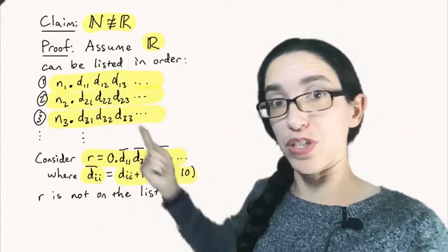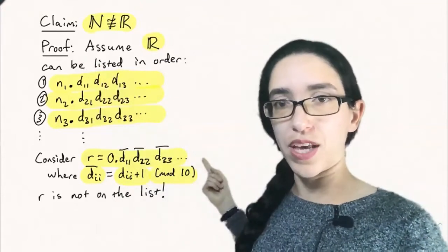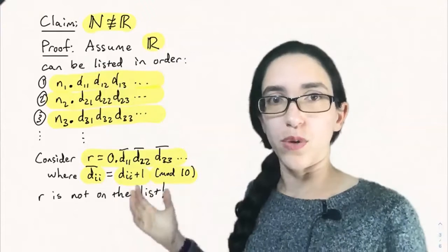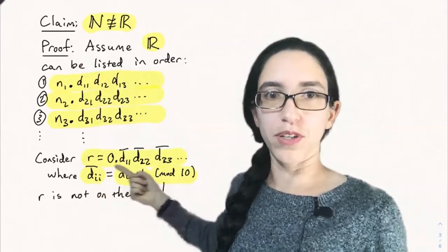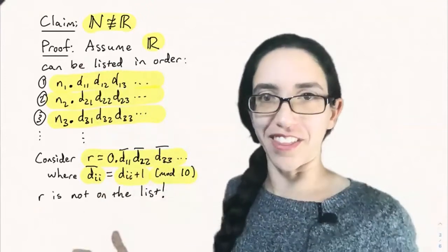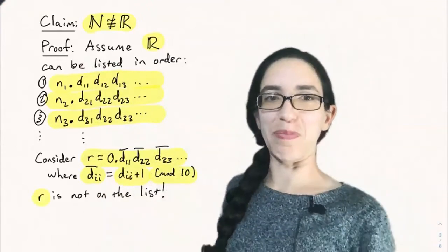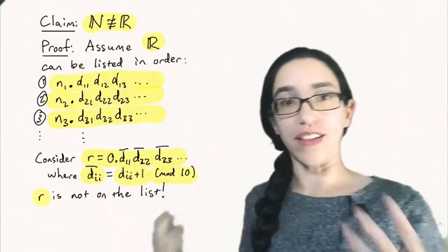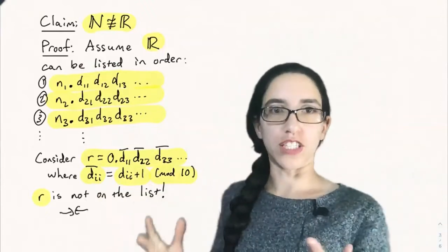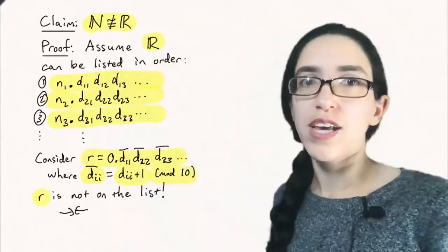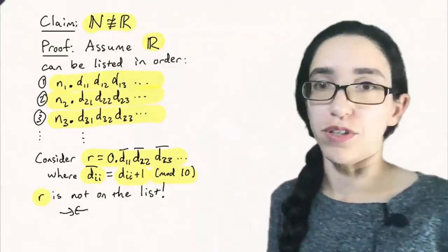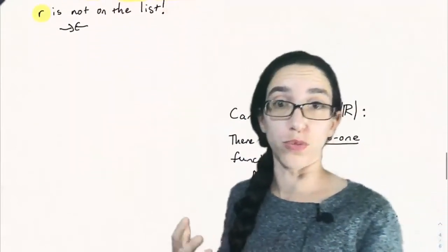And that gives us a contradiction because we said that we listed, we assumed that we listed all real numbers and we created a real number out of that list that's actually not on the list. And so this gives us a contradiction. R is not on the list. So we have a contradiction and that means our original assumption that R can be listed in order is false. And so we can't make a bijection between the natural numbers and the real numbers. The real numbers are just too big.